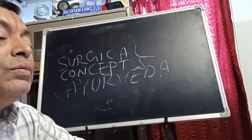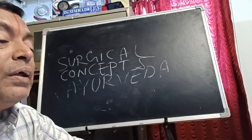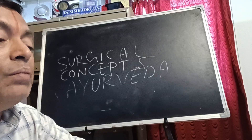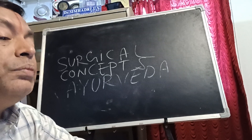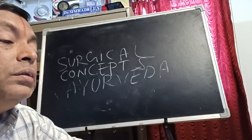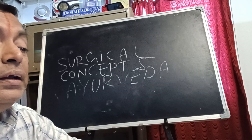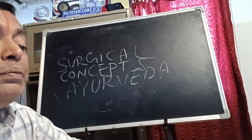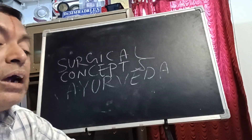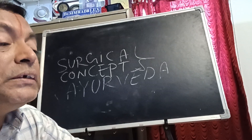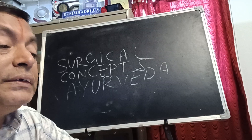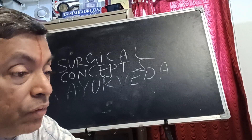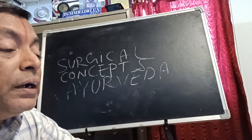In Sushruta Sutrasthana, the eleventh chapter is Charakalapana or Charakarma. They may ask you the chapter number or chapter name or the main content of each chapter. The twelfth chapter deals with the application of Agni karma — cauterization — clearly mentioned. Even today, we are following the same procedures.